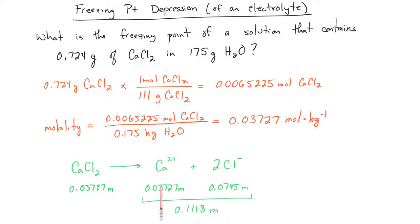In this case, we multiply it times three because we have a total of three particles that are going to be formed when calcium chloride dissociates.